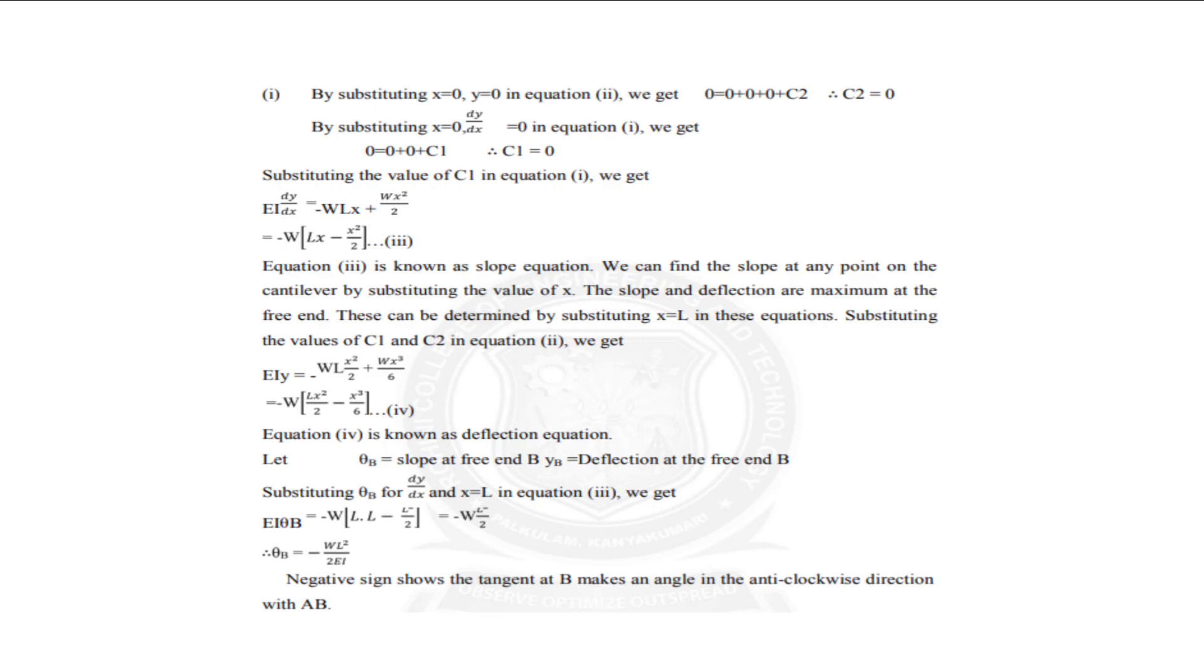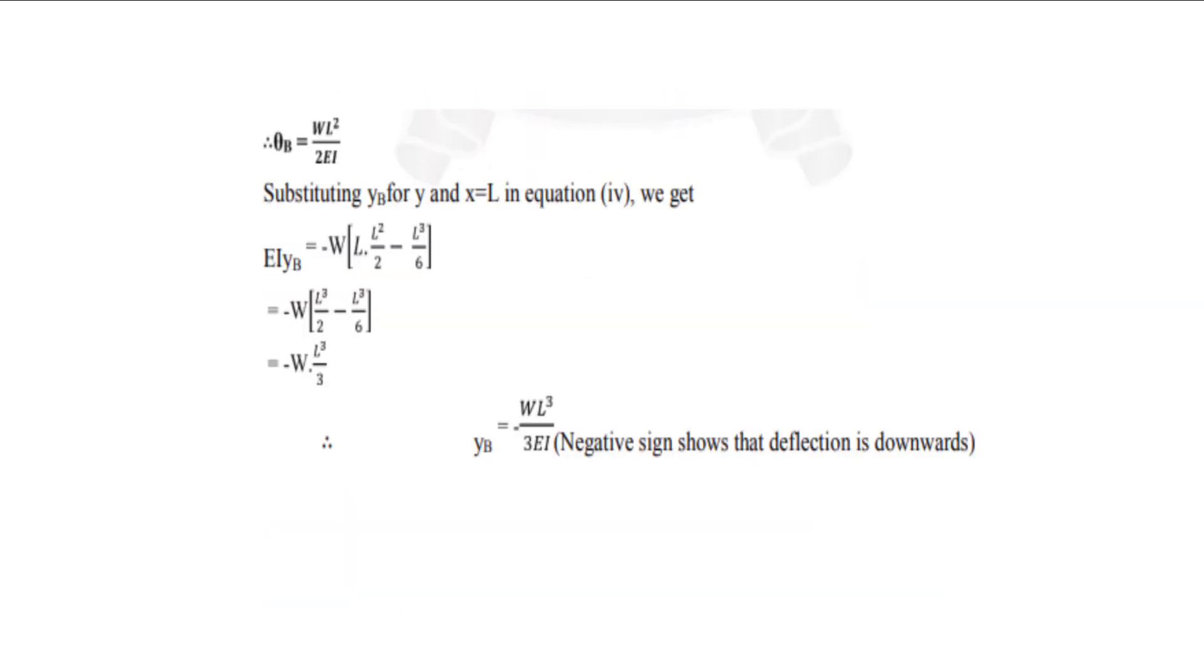Equating this fourth equation we know the deflection equation. And there will be a negative sign which shows that the tangent at B makes an angle in the anti-clockwise direction with BA. So here, therefore θB is equal to WL²/2EI.